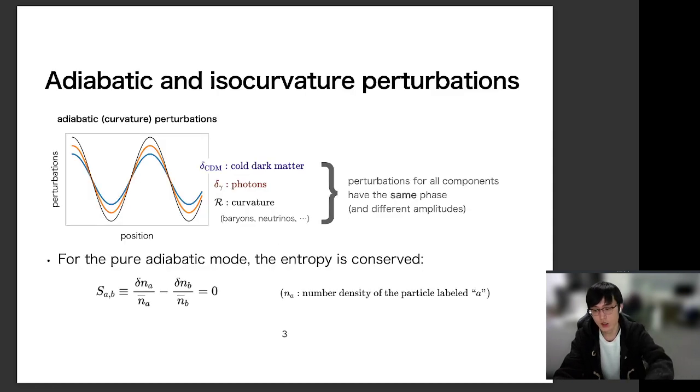This is a schematic picture of the adiabatic perturbations. In the simplest inflation scenario, the single-field slow-roll inflation predicts the adiabatic perturbations. For the adiabatic perturbations, all the components of the fluid are fluctuating in the same way. I mean, their fluctuations have the same phase as this picture,